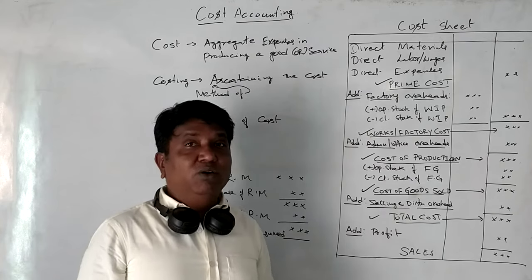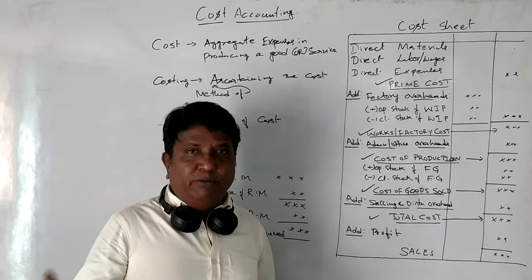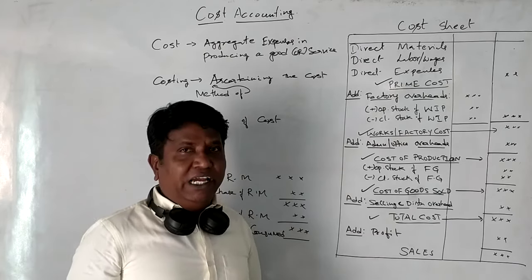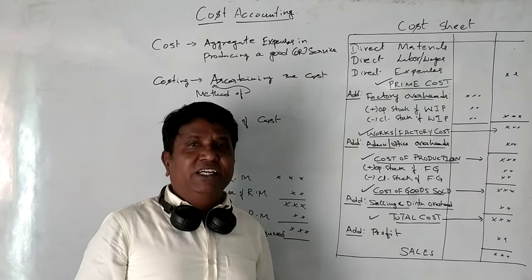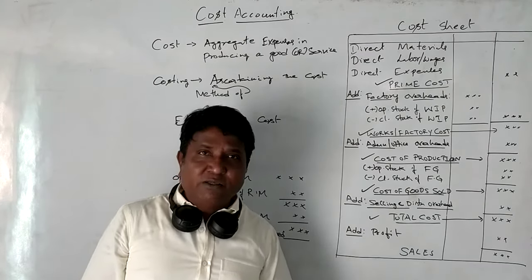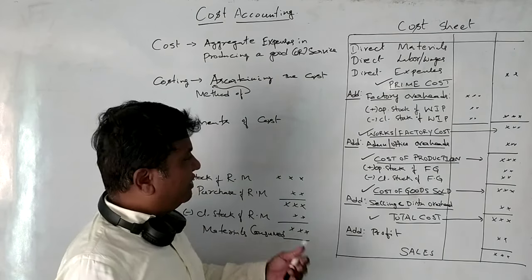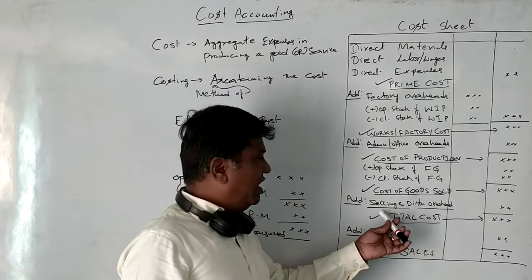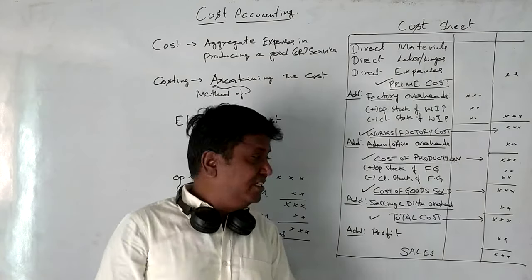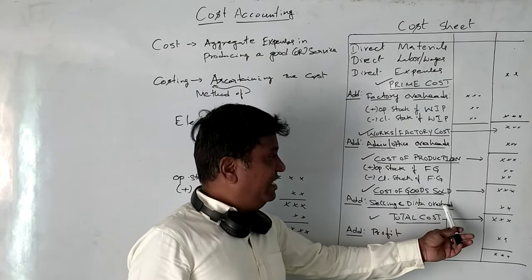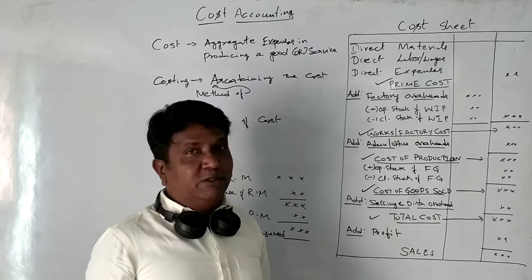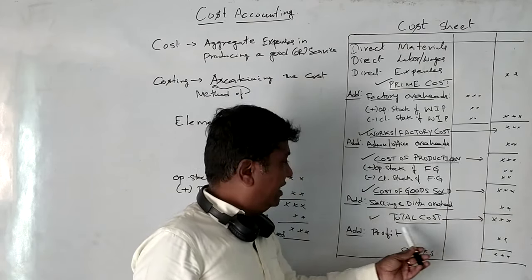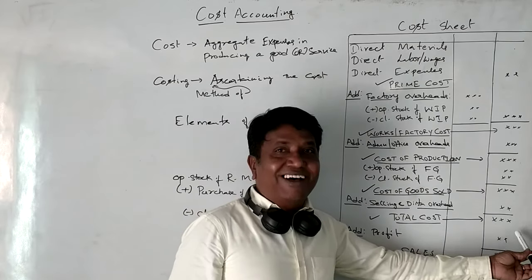Cost of Goods Sold includes the Cost of Production plus selling and distribution overhead expenses such as salesman expenses, advertisement, distribution, and traveling expenses. Selling and distribution overhead added to Cost of Production gives the Total Cost.